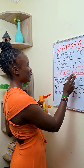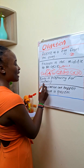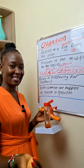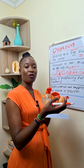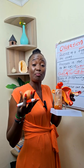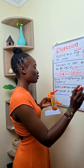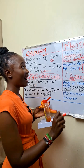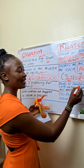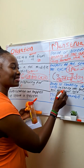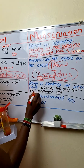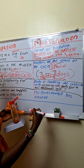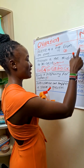Difference number three: during ovulation, the body is preparing for pregnancy. Because the egg has been released and is waiting for the sperm in order for fertilization to occur. While on the other hand, during menstruation, your body is shedding the uterine lining, therefore resetting the body for a new menstrual cycle. So once you're done with your period, that's another menstrual cycle beginning.